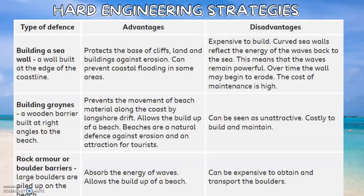Building Groins. Groins are wooden barriers built at right angles towards the beach. These prevent the movement of beach material along the coast, known as longshore drift. This allows the build-up of a beach. Beaches are a natural defence against erosion because they absorb wave energy and are an attraction for tourists. Disadvantages: groins can be seen as unattractive and are costly to build and maintain.